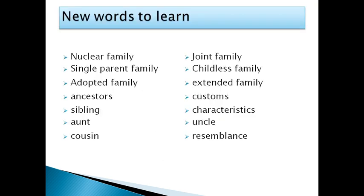New words to learn: nuclear family, joint family, single parent family, childless family, adopted family, extended family. Ancestors means a person related to you who lived a long time ago. Customs means some kind of tradition. Sibling means your brother or sister. Characteristics means some kind of features or quality you have. Cousin is the child of your uncle or aunt. Resemblance means being alike.